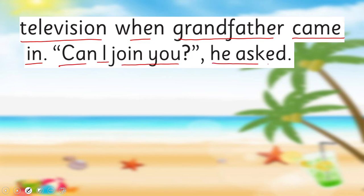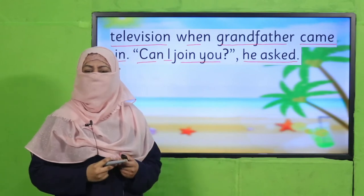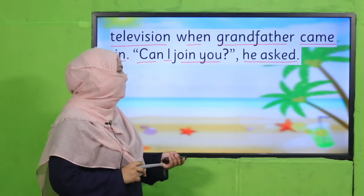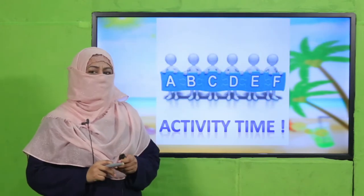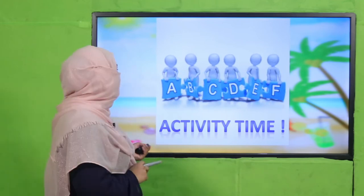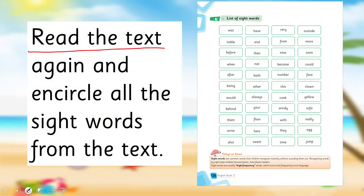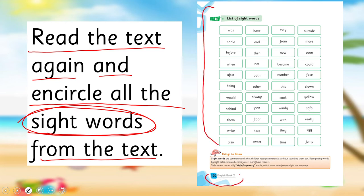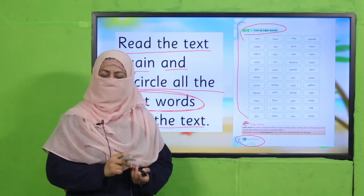'Can I join you?' he asked. I am stopping the reading here — we will continue tomorrow. Now it is your turn. You will read the text again and circle all the sight words. I just told you about sight words — whatever sight words are there in the text, circle them. You can take help from the last page of your book, where a list of sight words is given. You are allowed to use it. Pause the video, complete this activity, and then come back.